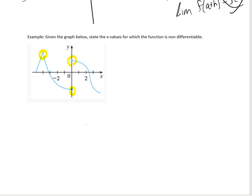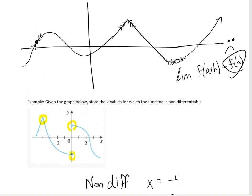Looking at the graph, we want to state the x values for which the function is non-differentiable. We cannot take the derivative at sharp points or where the function fails to be continuous. The function is non-differentiable at x equals negative 4 and x equals 0. At negative 4 we would have a different slope from the left versus the right, and at 0 we have a break in the graph, so we don't know what value to choose for f of a.